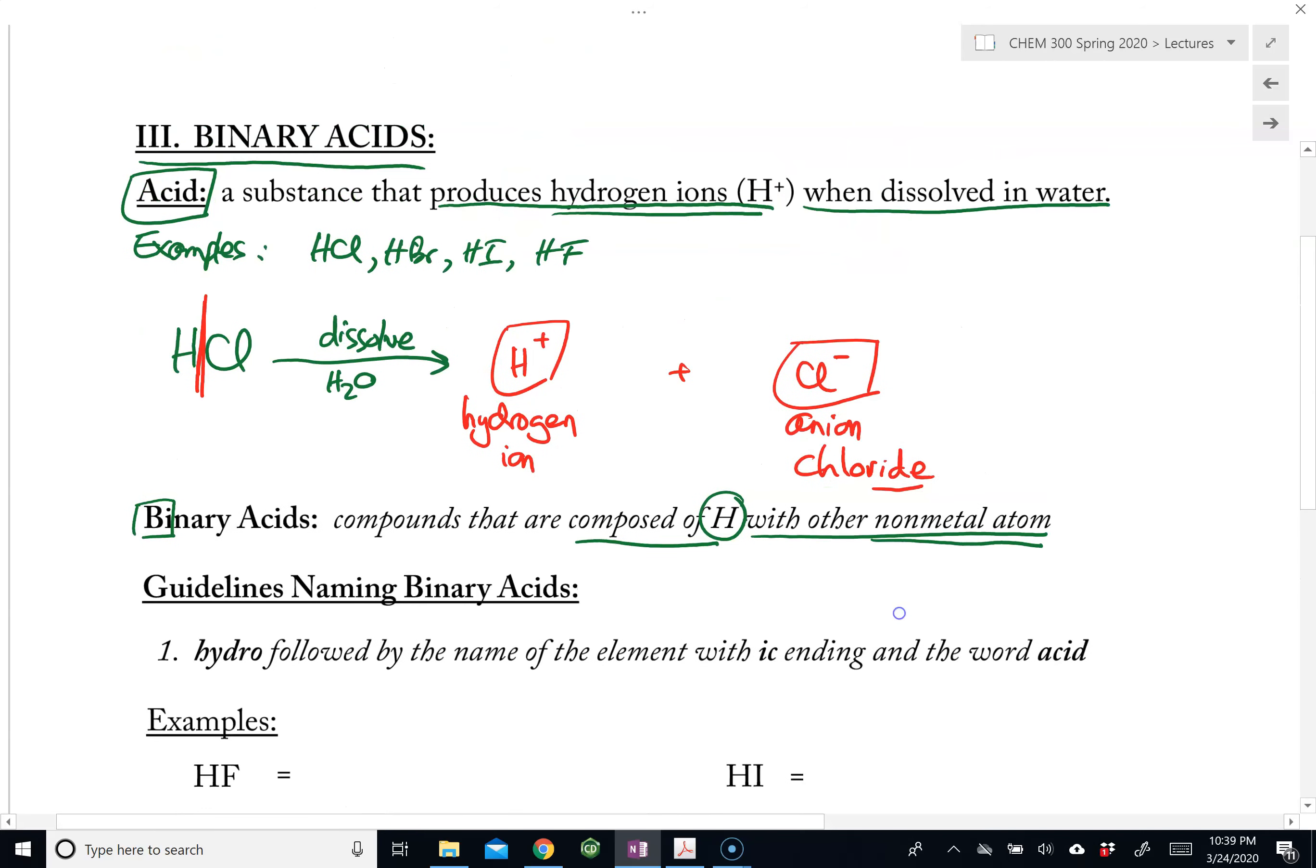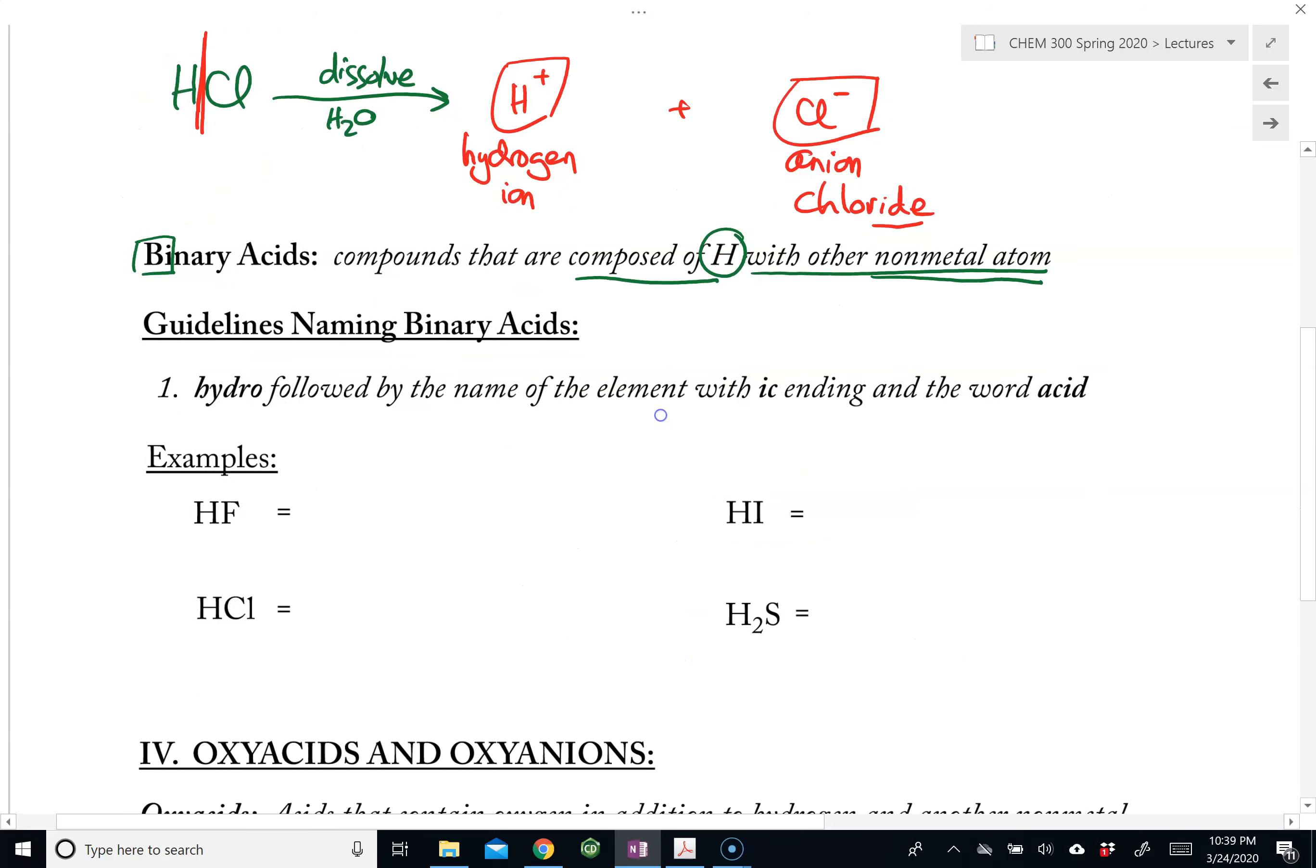There's not a lot of binary acids out there, only a few of them. And this would be the naming guideline for them. We would name them with the word hydro followed by the name of the non-metal with the ic ending and the word acid.